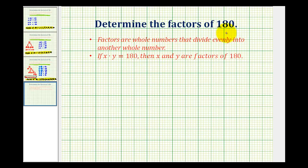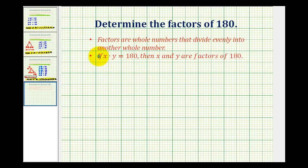We want to determine the factors of 180. The factors are the whole numbers that divide evenly into another whole number, so we want all of the whole numbers that divide evenly into 180. It's also true that if x times y equals 180, and x and y are whole numbers, then x and y are factors of 180. We'll use the prime factorization of 180 to help us determine all of the factors.